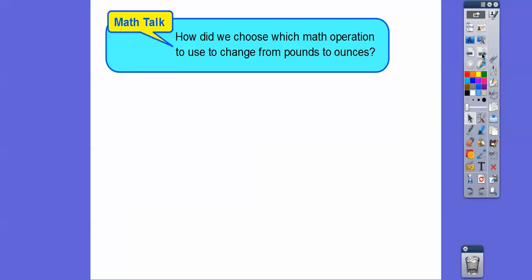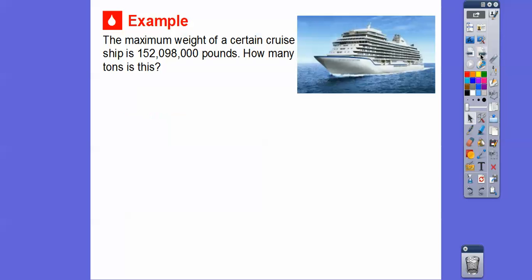All right, how do we choose which math operation to change from pounds to ounces? Well, remember, when we go from a larger unit to a smaller unit, then we multiply. If we went from a smaller unit to a larger unit, we're going to divide, and that's what we're going to do in this next problem here. So here we go.